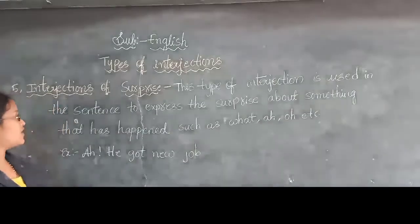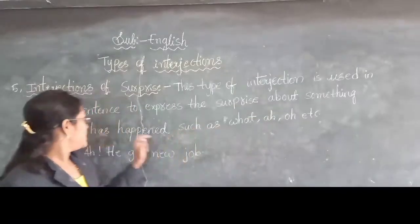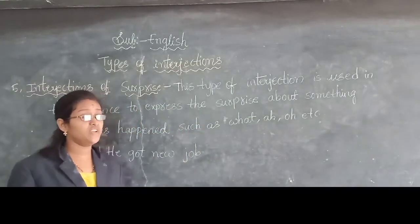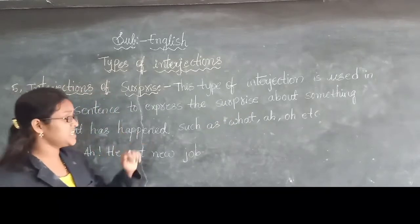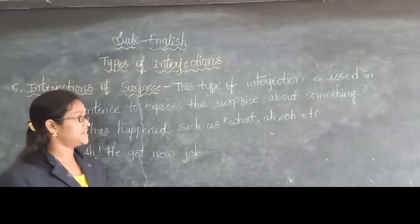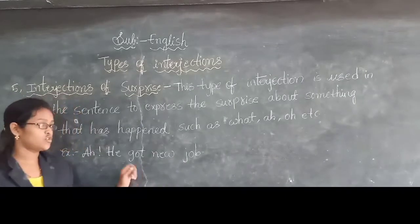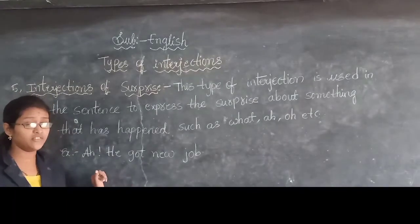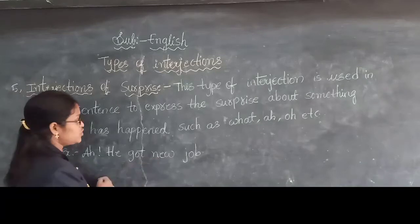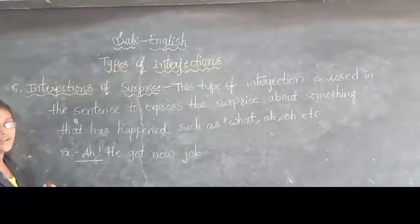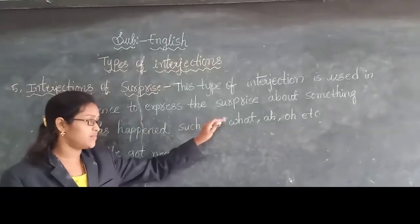Next type of interjection is interjections of surprise. This type of interjection is used in the sentence to express surprise about something that has happened. Whenever a surprising thing happens, we use interjections of surprise. For example: Ha! He got a new job. Suddenly getting a new job, we feel very surprised. In this sentence ha is the interjection of surprise. This type is used to express surprise about something that happened.